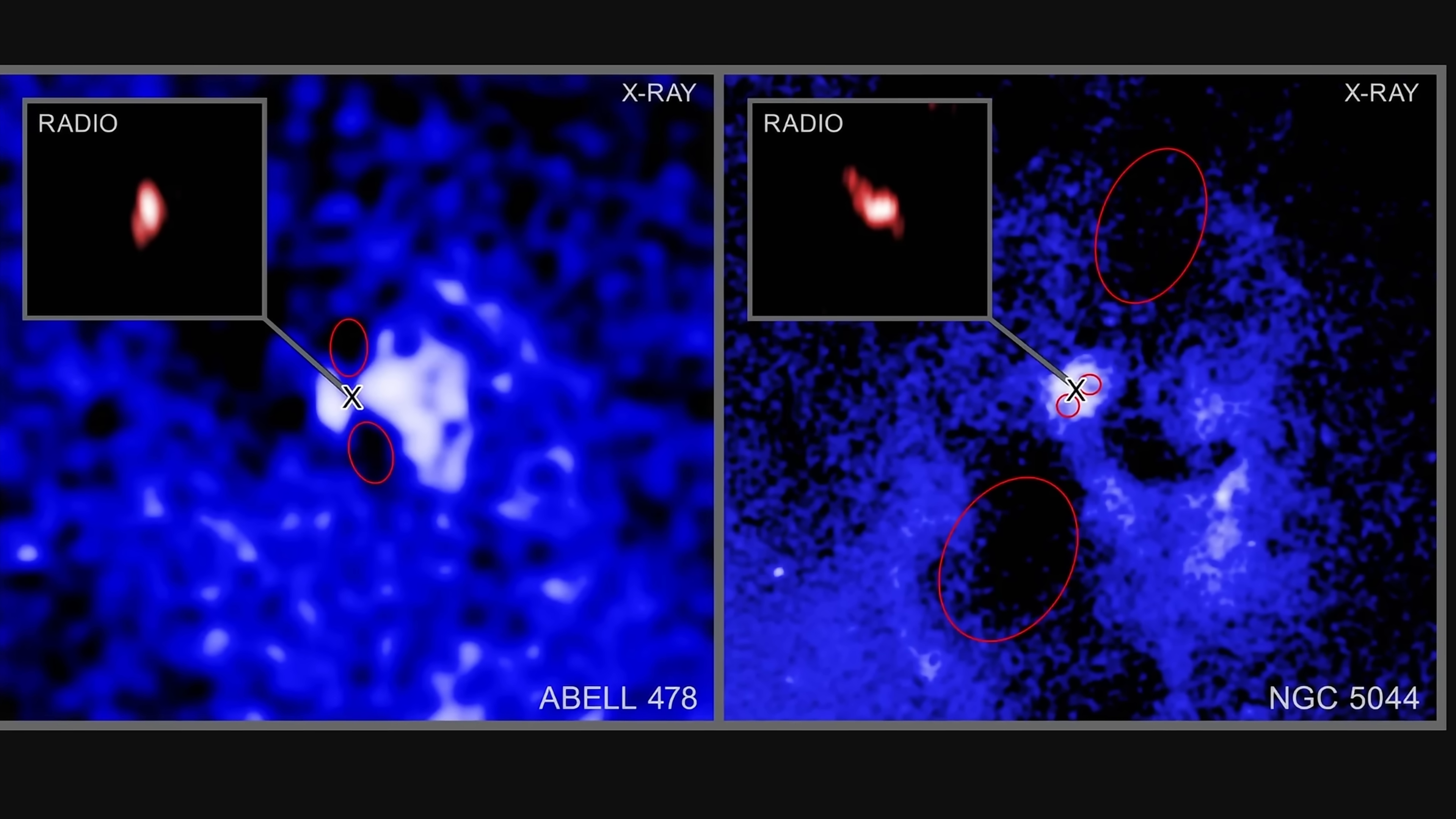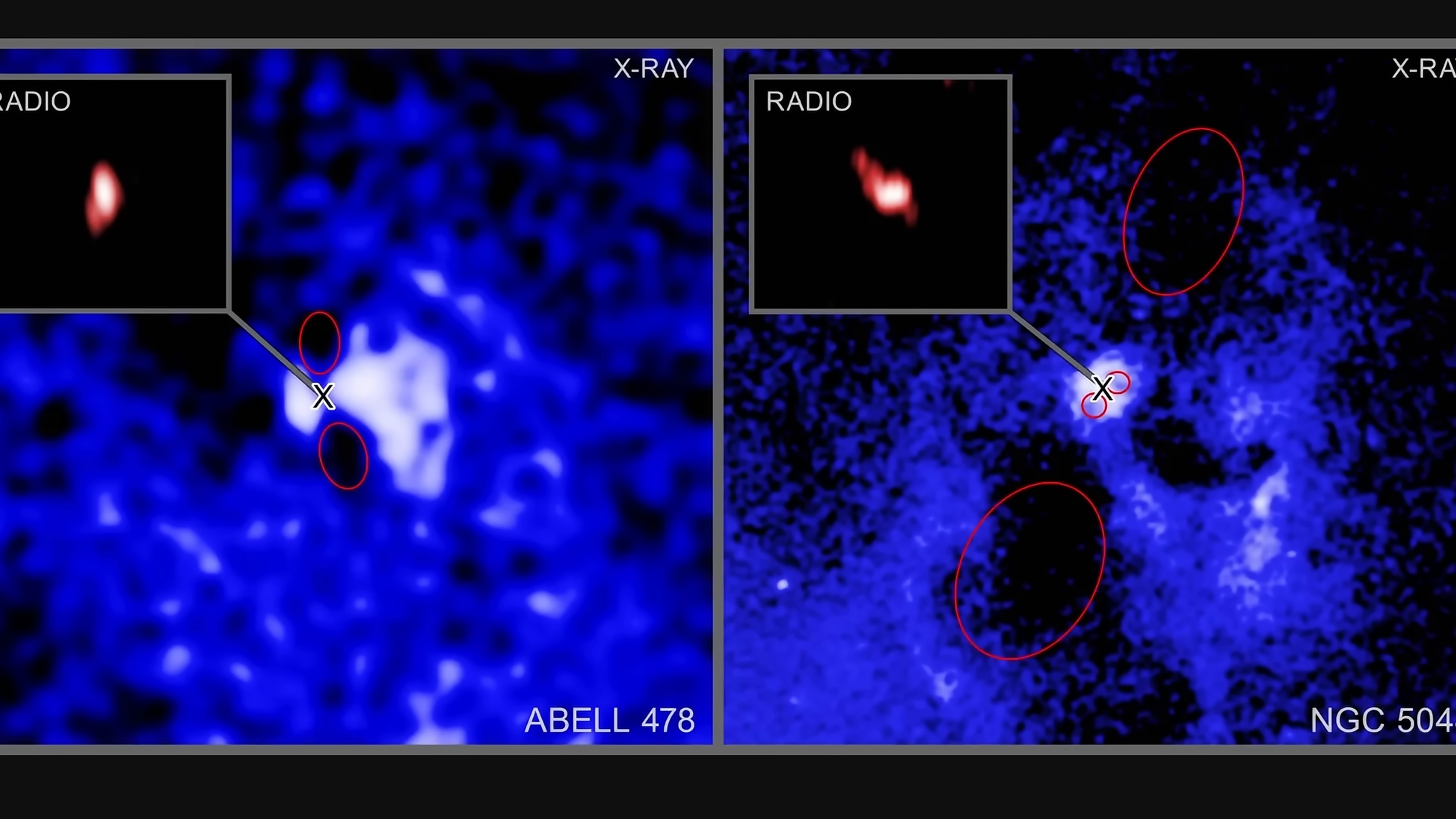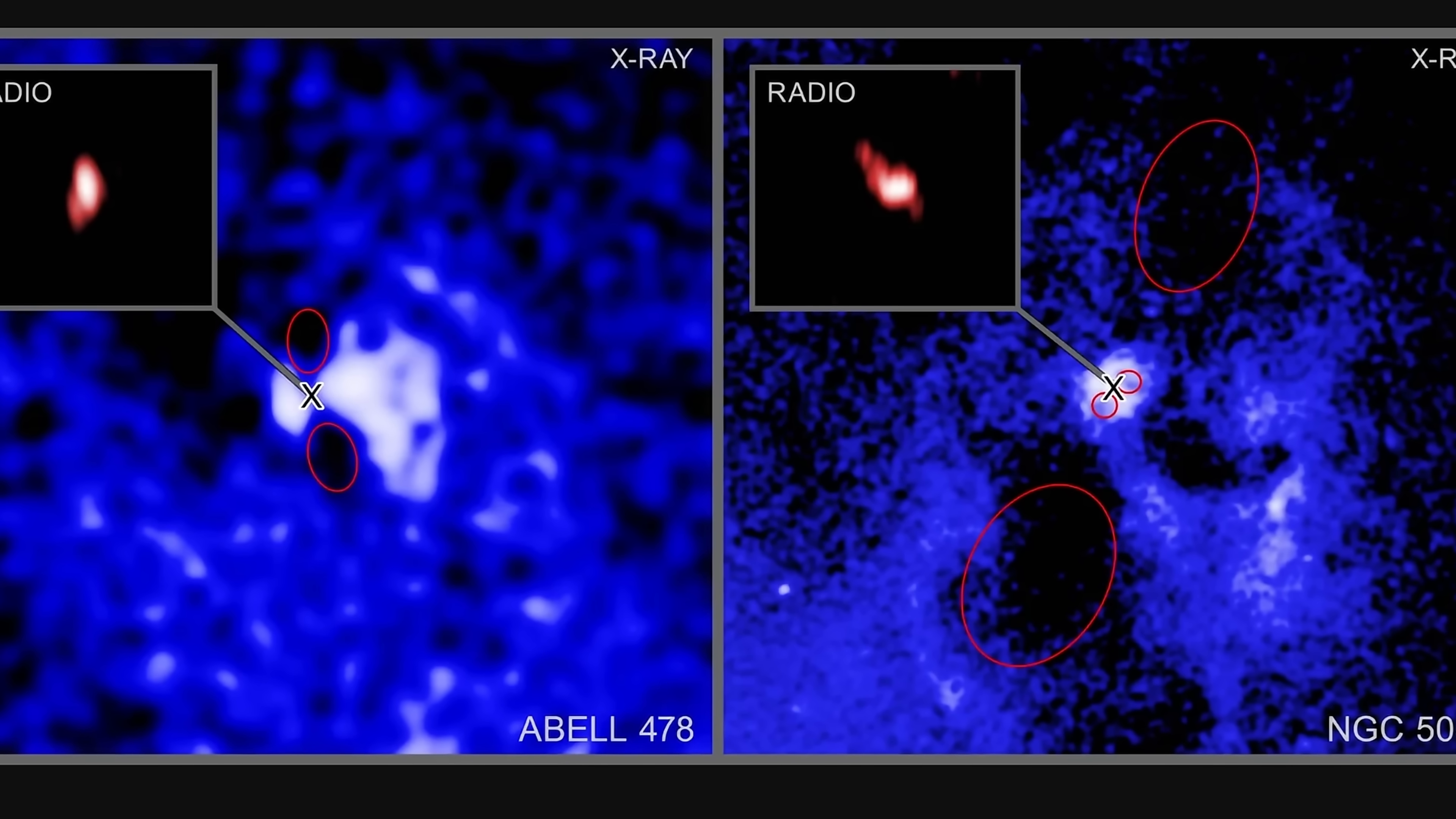For example, here are two galaxies, Abell 478 and NGC 5044, showing us x-ray and radio emissions from the central region.